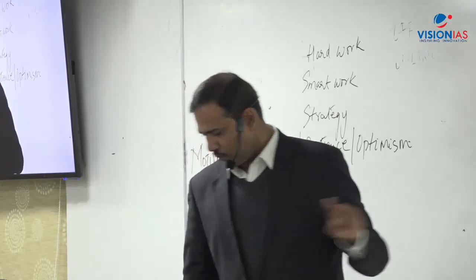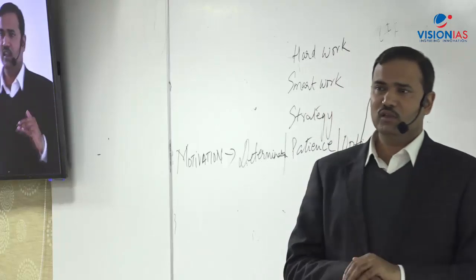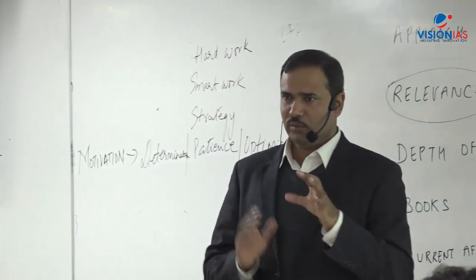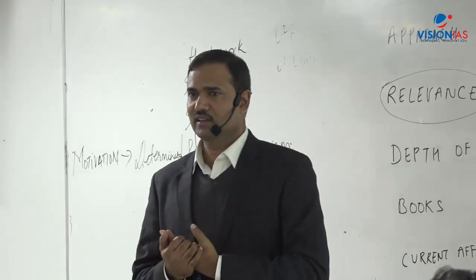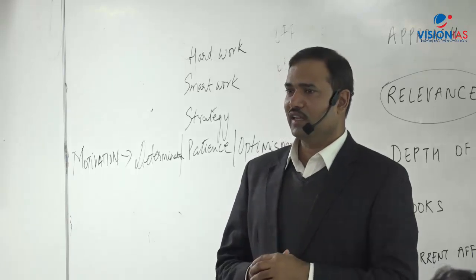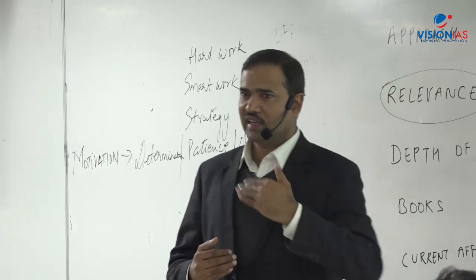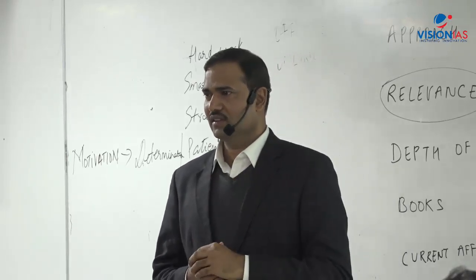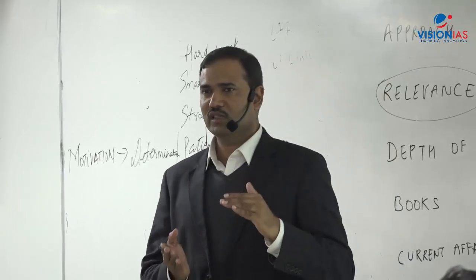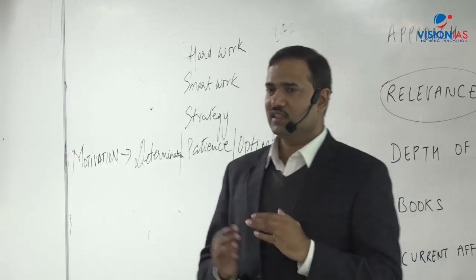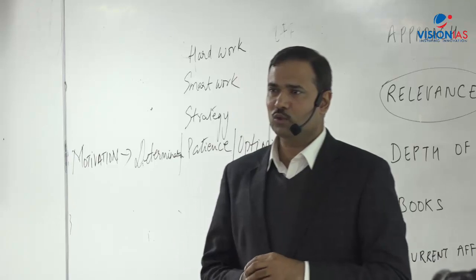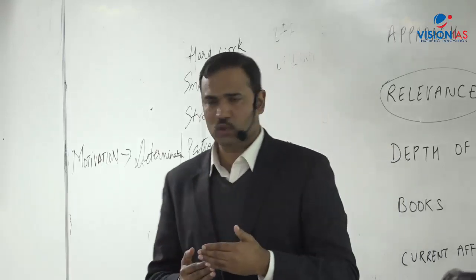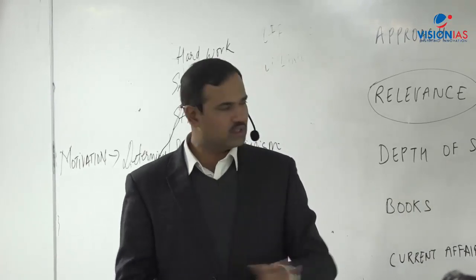Another banking question was on inter-creditor agreement — the Sunil Mehta committee suggested that banks should enter into agreements to cooperate in NPA recovery through inter-creditor agreements. There was also a question on money multiplier — if RBI prints 100 rupees, the overall money supply increases by a multiple of that. The correct option for increasing the money multiplier was an increase in banking habits of the public, not increases in CRR or SLR.